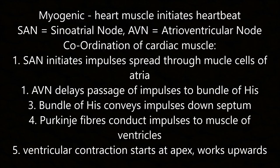Myogenic means the heart muscle initiates its own heartbeat. SAN is the sinoatrial node and AVN is the atrioventricular node. Coordination of cardiac muscle: the SAN initiates impulses spreading through the atrial muscle cells; the AVN delays the passage of impulses to the bundle of His; the bundle of His conveys impulses down the septum; the Purkinje fibres conduct impulses to the ventricular muscles. Ventricular contraction starts at the apex and works upwards.